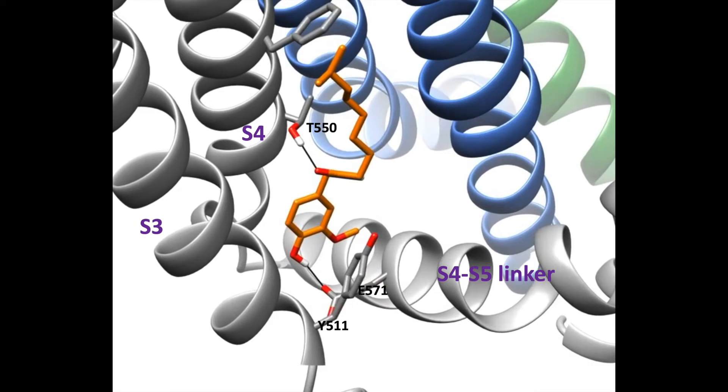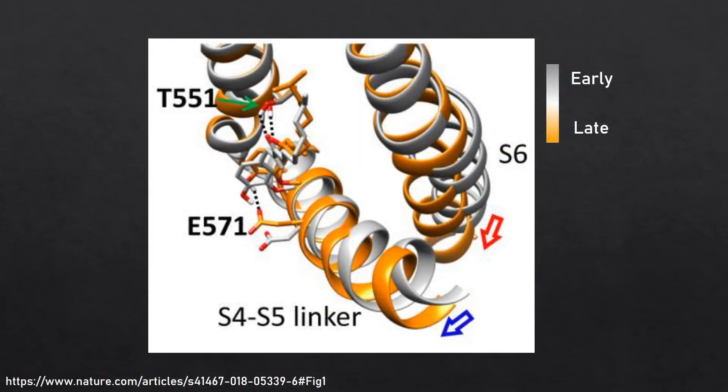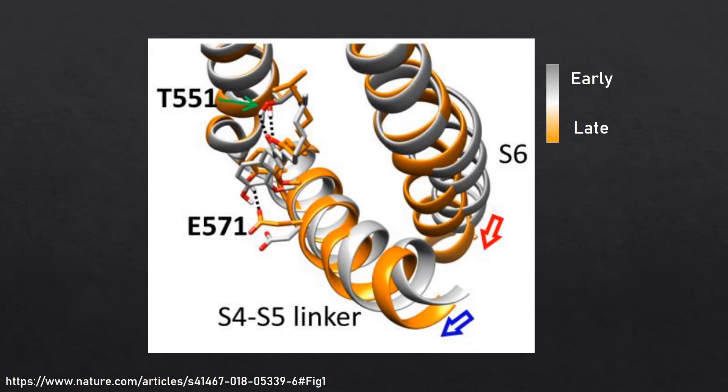At the same time, hydrogen bonds form between the amide oxygen atom of the capsaicin and the threonine 550 on the S4 helix. Capsaicin pulls in glutamate 571, stabilizing the S4-S5 linker in its outward conformation. As the S4-S5 linker swings outward, helix S6 follows behind to open the lower activation gate.